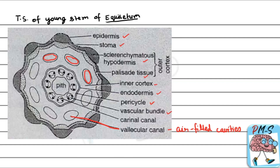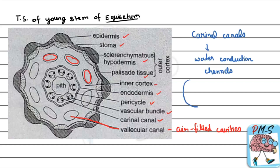After the inner cortex, we have the endodermis, then pericycle, and then vascular bundles. Within the vascular bundles, we have carinal canals. The function of carinal canals is water conduction — they are water conduction channels.